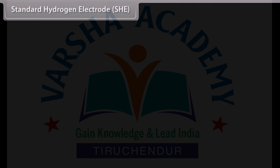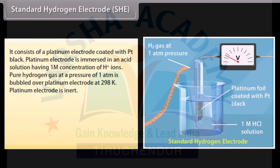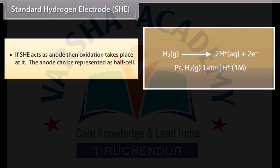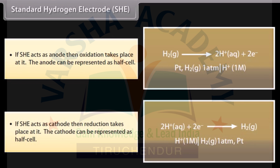Standard Hydrogen Electrode (SHE): It consists of a platinum electrode with platinum black, immersed in an acid solution having 1M concentration of hydrogen ions. Pure hydrogen gas at a pressure of 1 atm is bubbled over the platinum electrode at 298 K. The platinum electrode is inert; the half-reaction takes place at its surface. The hydrogen electrode can act as anode or cathode depending on the nature of the second electrode. The electrode potential of the standard hydrogen electrode is taken as zero.